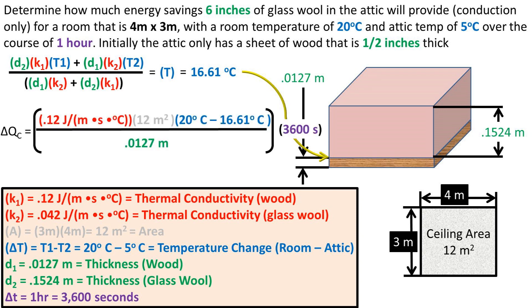Next, we can either use the heat transfer through conduction formula for the wood or the glass wool. I decided to use the equation for the wood because it was already in my calculator. Plugging in our temperature we just found into the equation, we get a heat transfer from conduction of 1.4 million joules, or if we leave out the 3,600 seconds, 384.4 watts.